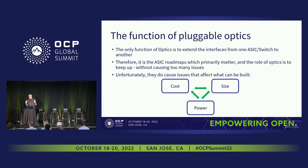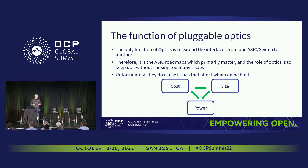The real function of pluggable optics, from a switch vendor's perspective like Cisco, is to extend the interfaces from the ASIC to somewhere else — a NIC on a server or another switch ASIC higher up in the data center hierarchy. Therefore, the ASIC is really the core and the heartbeat. It sets the cadence for what we have to do and solve as system designers and as optics designers.